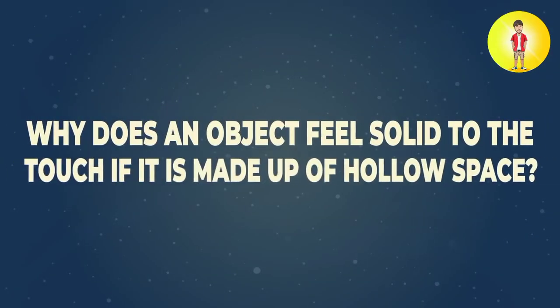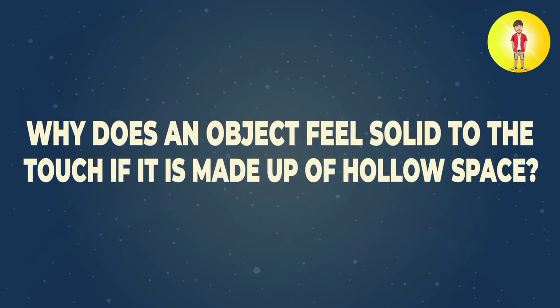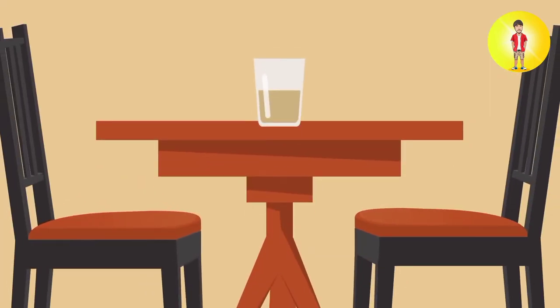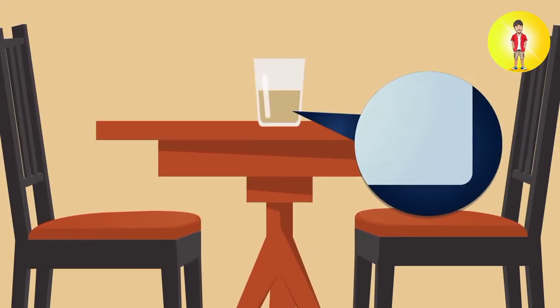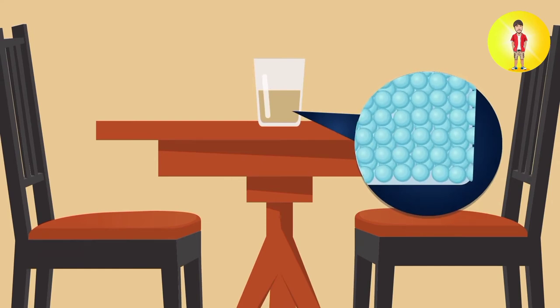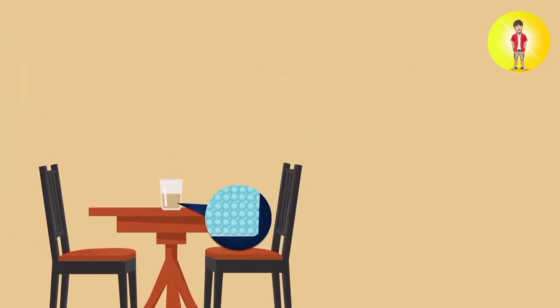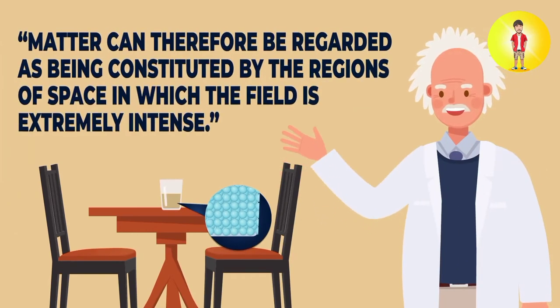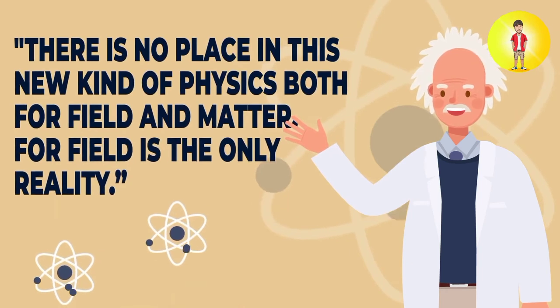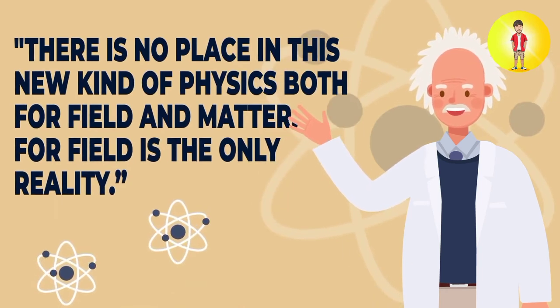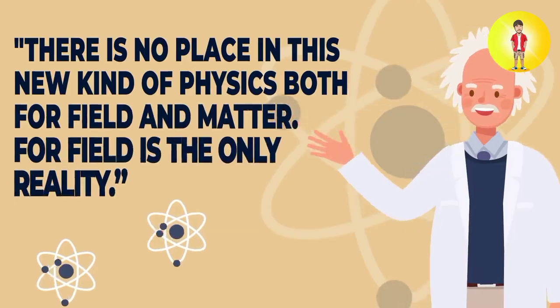Why then, do these solids feel solid to touch, if they are mostly made of hollow space? The reason matter feels solid is because these atoms are constantly pushing away from each other, like magnets of the same polarity. Therefore, what really holds all matter together is the presence of a fluctuating energy around the atoms. In fact, Albert Einstein says, matter can therefore be regarded as being constituted by the regions of space in which the field is extremely intense. He went further to say, there's no place in this new kind of physics for both field and matter. For a field is the only reality.